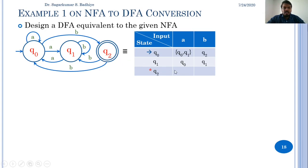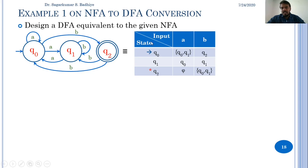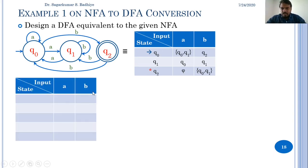In q2, if 'a' is the input, there is no transition, so we add phi — this is a dead configuration. In q2, if 'b' is the input, the transition can be to q1 or q0, as there are two transitions on 'b', so this is written as the set {q0, q1}. Now this transition table can be used to convert the NFA into an equivalent DFA. We'll obtain a transition table for the DFA.